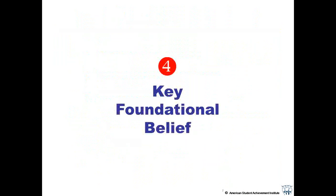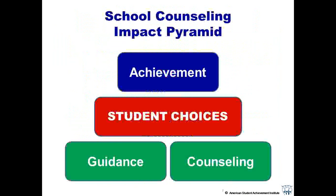The first foundational belief is that school counseling impacts academic achievement. To illustrate this, we created the School Counseling Impact Pyramid. When students are involved in sound guidance and counseling activities, they tend to make better choices in areas that impact student achievement, and as a result, achievement goes up. We believe that RSC schools showing higher achievement are succeeding because they focus on designing programs that help students make better choices.